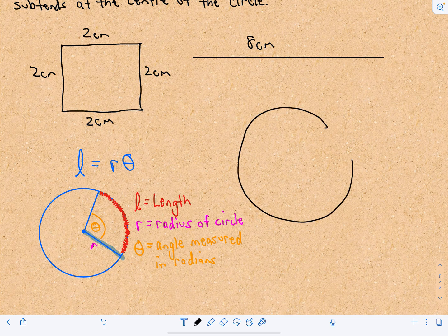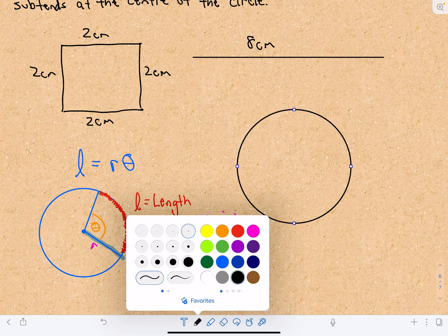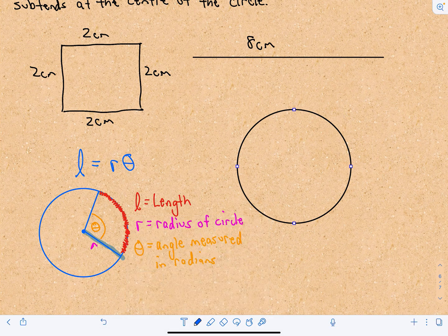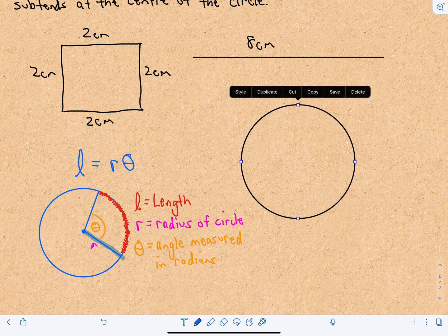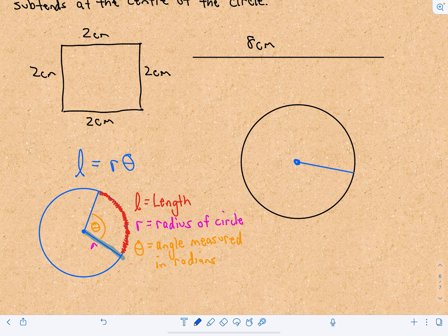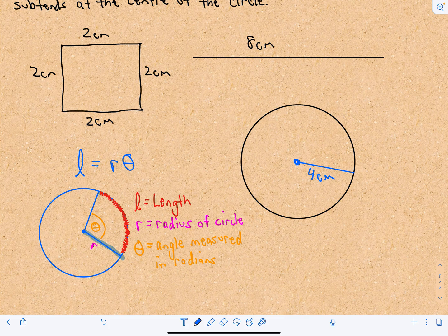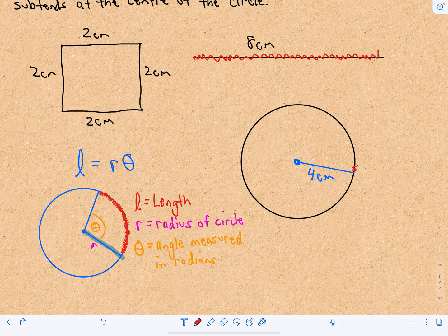So let me see if I can draw a little circle here real quick. There we go. So let's pretend that this has a radius of four centimeters. And this length of wire, let's pretend the wire is in red, this length of wire is eight centimeters.